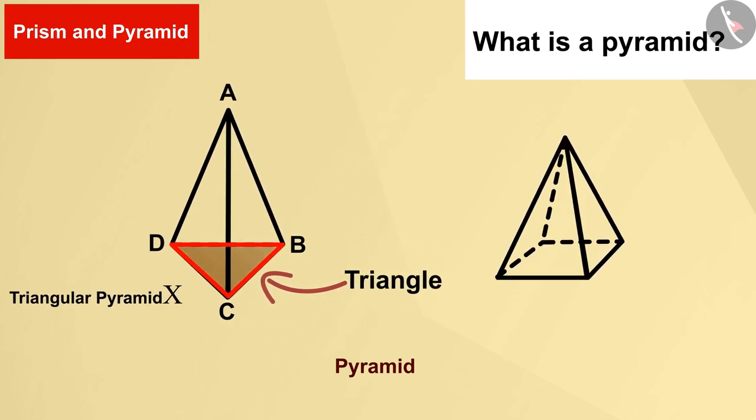Here is another solid figure whose base is a square, and all other faces are triangles. Can you see that there is a triangle on each side of the square? This solid is a square pyramid because its base is a square.